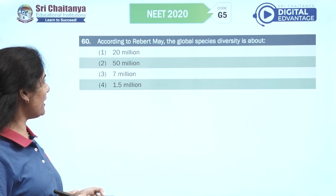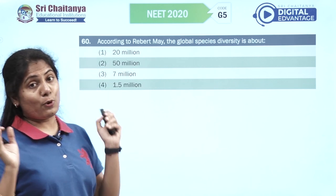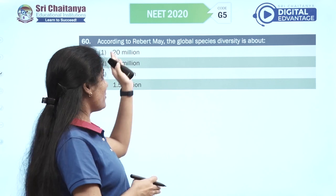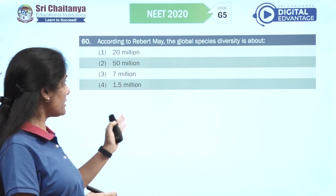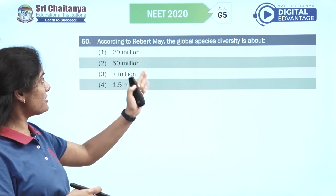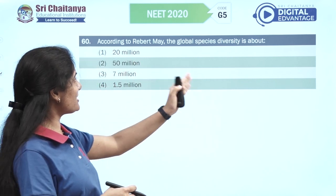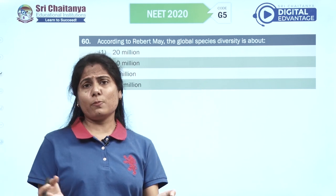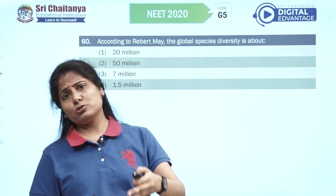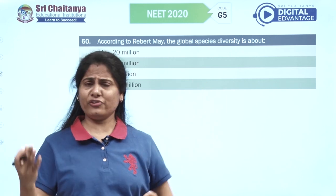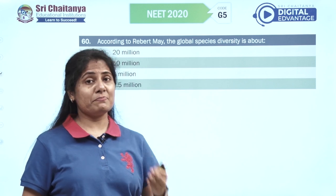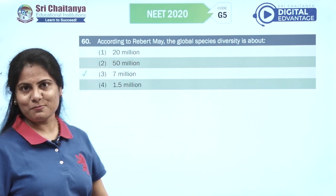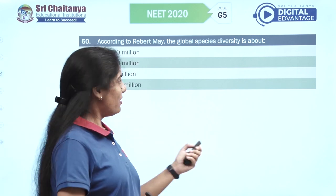According to Robert May, the global species diversity is about — the global estimate has gone to 20 to 50 million, but Robert May said it's about 7 million.